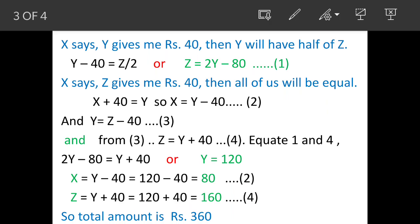The first statement is X is saying if Y gives him Rs. 40, then Y will have half of money held by Z. So Y has given 40 rupees to X and he becomes half of Z. This is our equation 1. Here we can say Z = 2Y - 80.